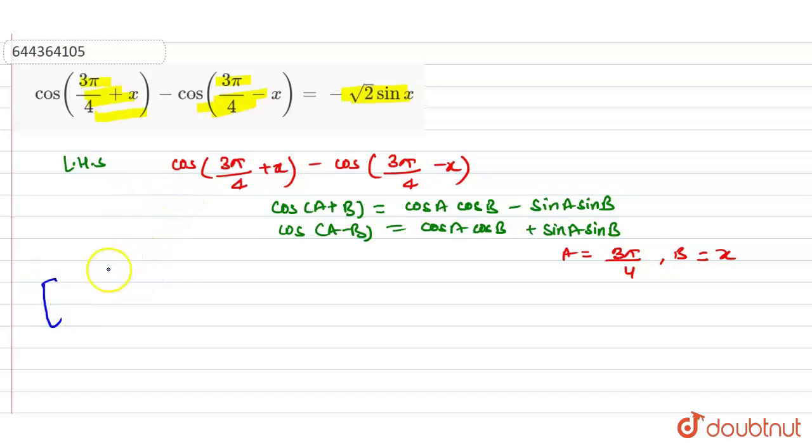we can write the above expression as cos 3π/4 into cos x minus sin 3π/4 into sin x